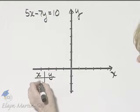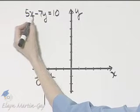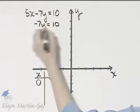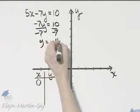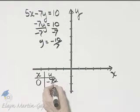We can find the y-intercept by letting x be zero. If we let x be zero, that term is gone and I have negative 7y is 10. Divide both sides by negative 7 and y is negative 10 sevens, negative 10 over 7.